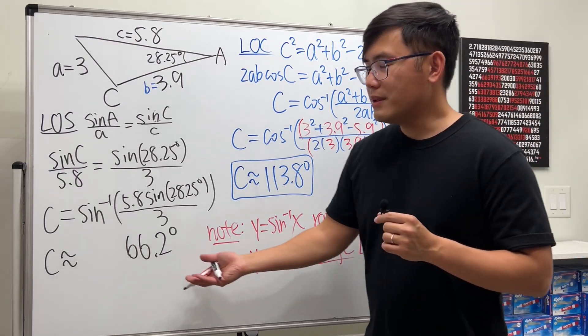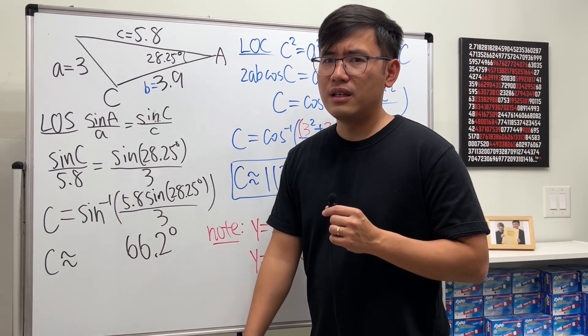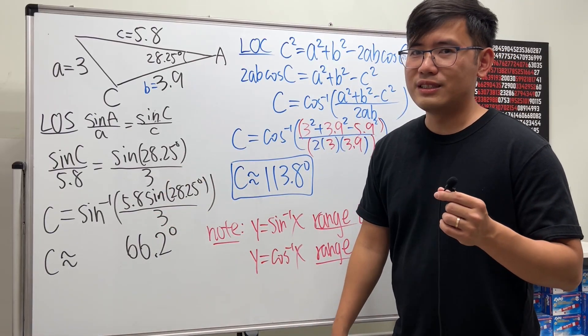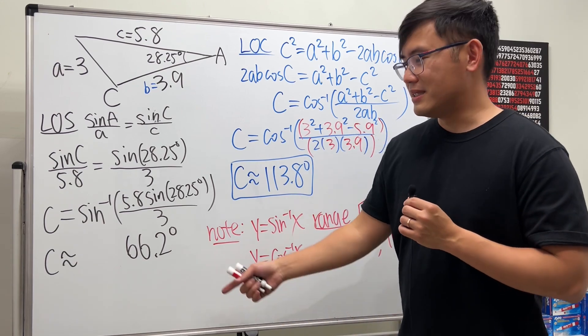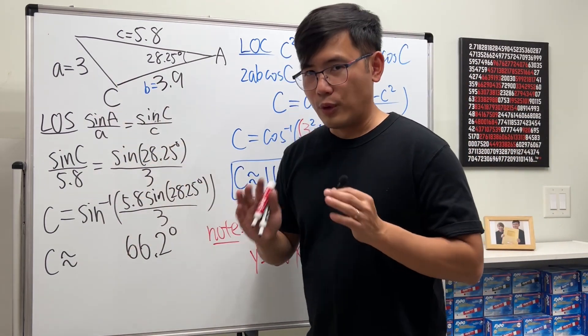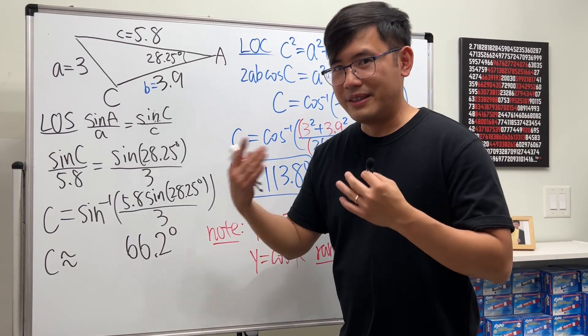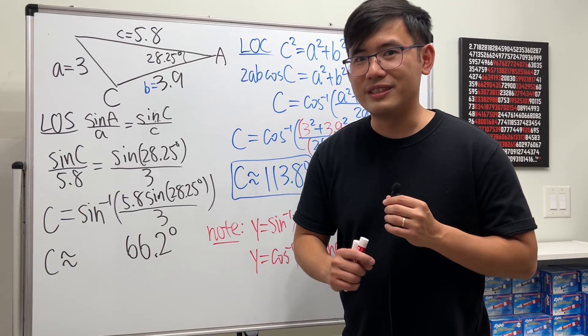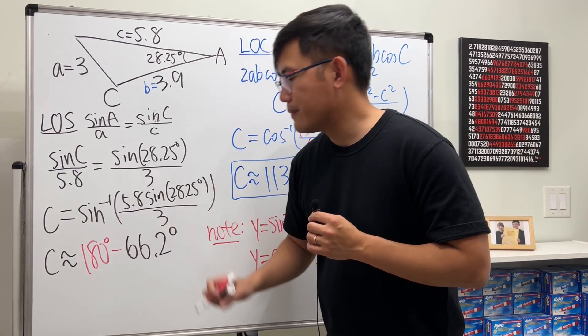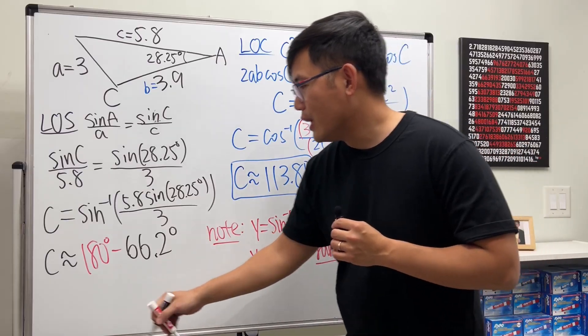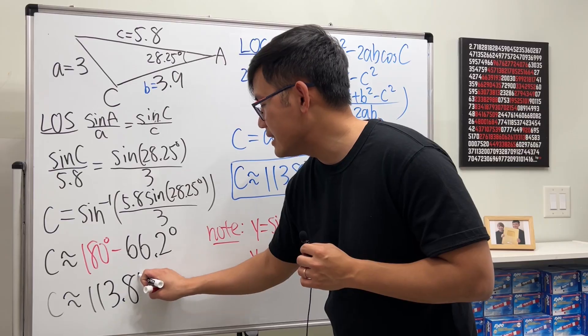Alright, so that answers the question, but what does the 66.2 represent? Can we still somehow make this work? Of course, the answer to that is yes, it's possible. The quick way to do this is like this. If you know the angle is for sure bigger than 90 degrees, but the answer does not give you the number bigger than 90 degrees, then you do this. Subtract this number from 180 degrees. If you work this out, you will see that C is approximately, yes, 113.8 degrees.